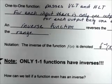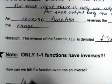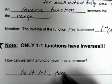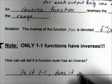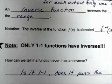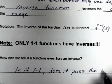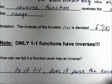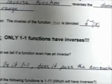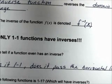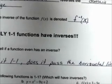How can we tell if a function has an inverse? Well, is it one-to-one? Does it pass the horizontal line test? If it passes the horizontal line test, then it's one-to-one, and if it's a one-to-one function, then it will have an inverse.